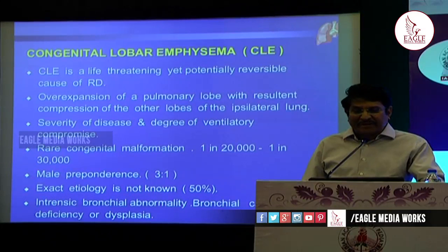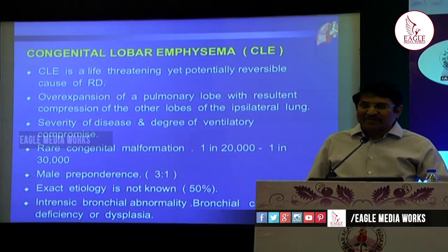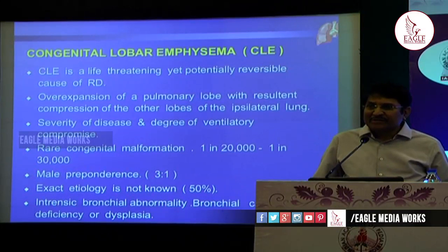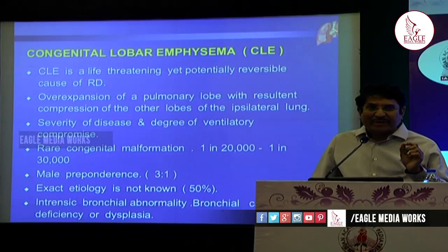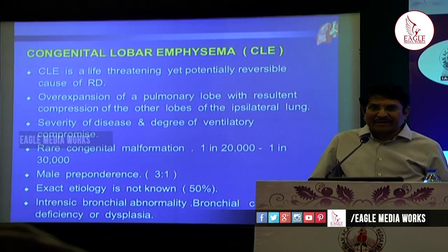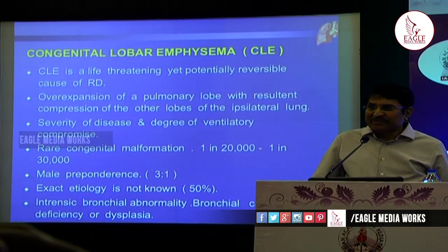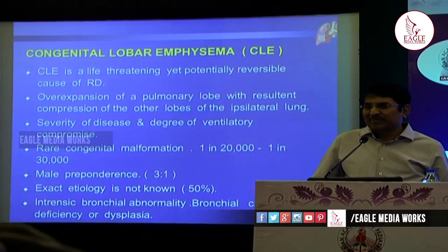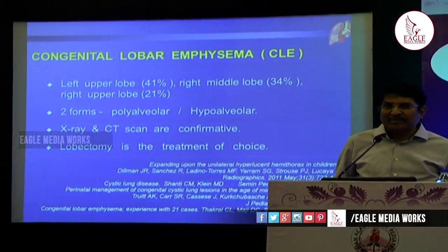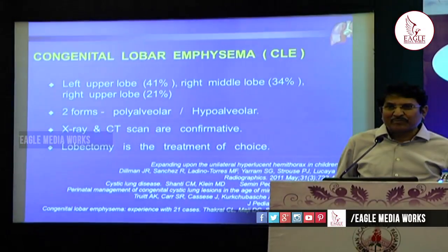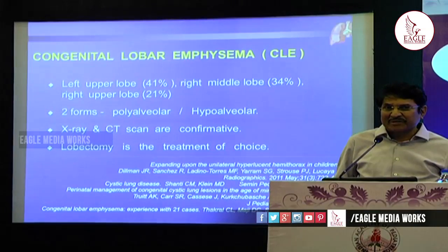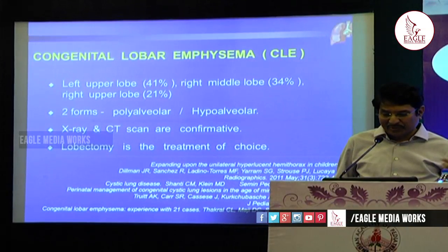Congenital lobar emphysema is actually a life-threatening condition but it is potentially reversible. If you detect it early and surgically correct it early, it gives an excellent result. It is an over-expansion causing compression of the other lobes. It commonly involves the left upper lobe; the second commonest is the right middle lobe — both cases we have seen now.